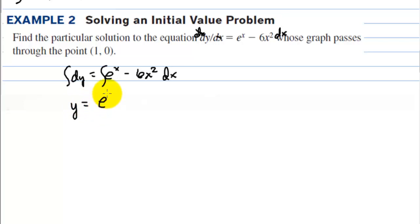That's y equals e to the x minus 2x to the third and then plus c. Well we're told that this function passes through the point (1, 0). Let's plug 0 in for y and we'll plug 1 in for the x's. So we have e to the first minus 2 and then plus c. C now is equal to 2 minus e. The final answer is y equals e to the x minus 2x to the third plus 2 minus e.